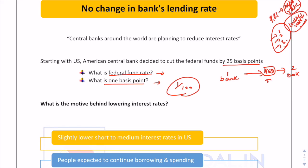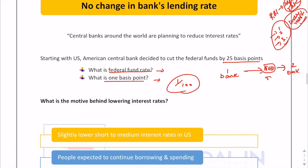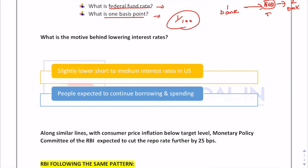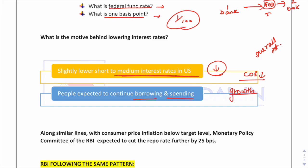The motive behind the US lowering its federal fund rate was that overall interest rates would go down, and the median interest rates in the US would thereby be reduced. With this reduced interest rate, the cost of borrowing would come down, and as a result people were expected to continue borrowing and spending to spur growth.